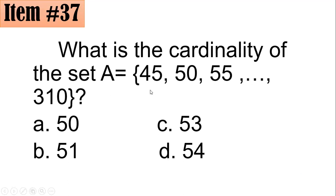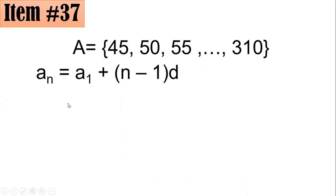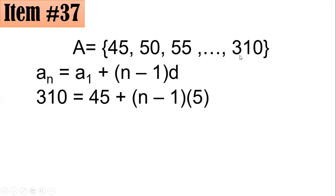The numbers 45, 50, 55, until 310 have a common difference, so this is an arithmetic sequence. The formula for the explicit form is a sub n equals a sub 1 plus (n minus 1) times d, where a sub n is the last term, a sub 1 is the first term, n is the number of elements, and d is the common difference. Our last term is 310, first term is 45, and since 50 minus 45 equals 5, the common difference d is 5.